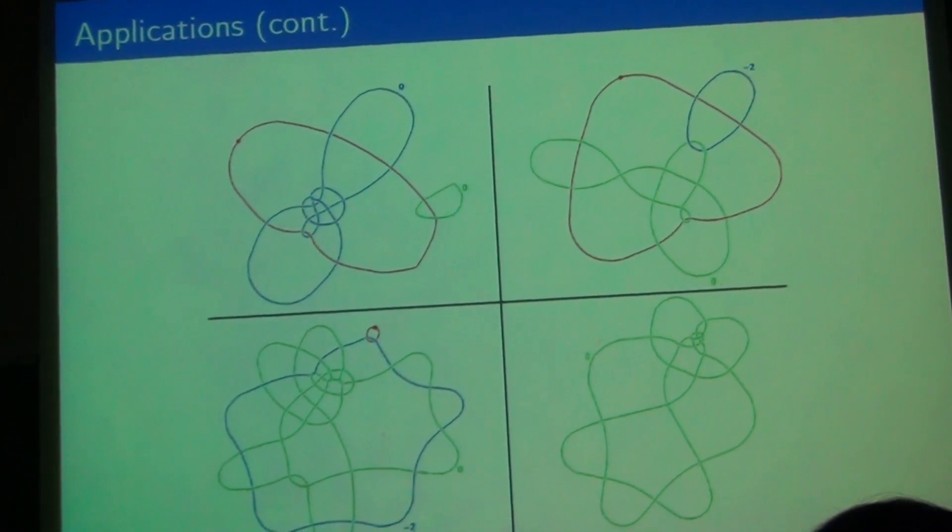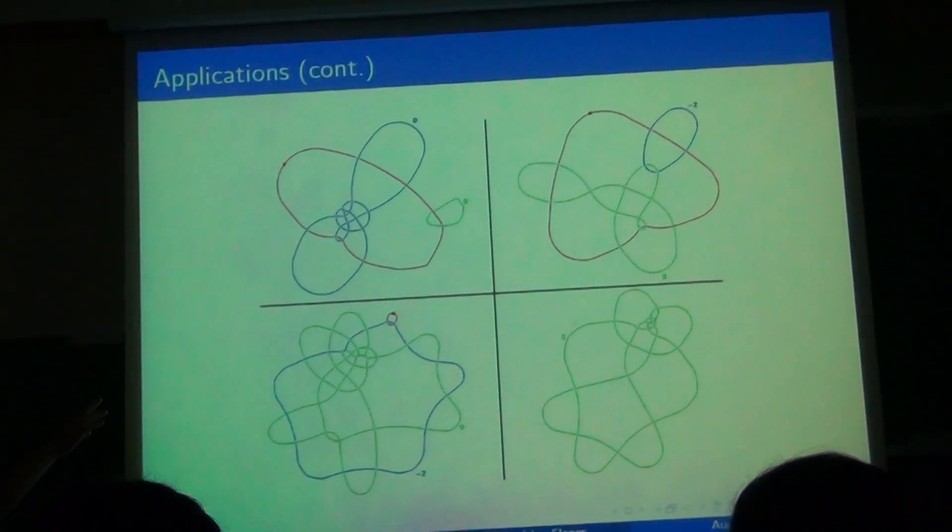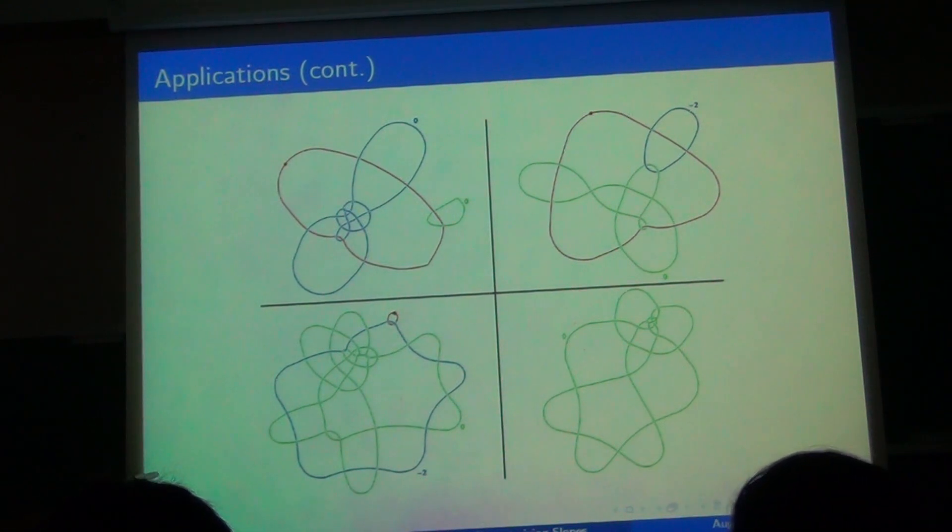That's actually what we did. We had a knot in blue, and then we had the meridians in order to produce a knot in green with the same zero surgery as that knot.